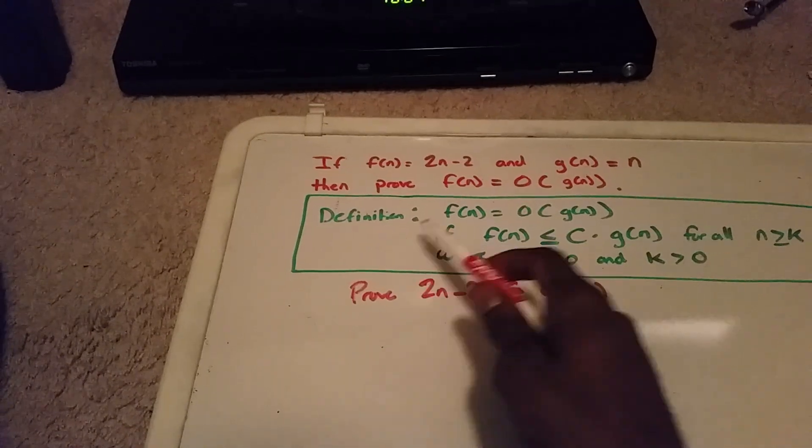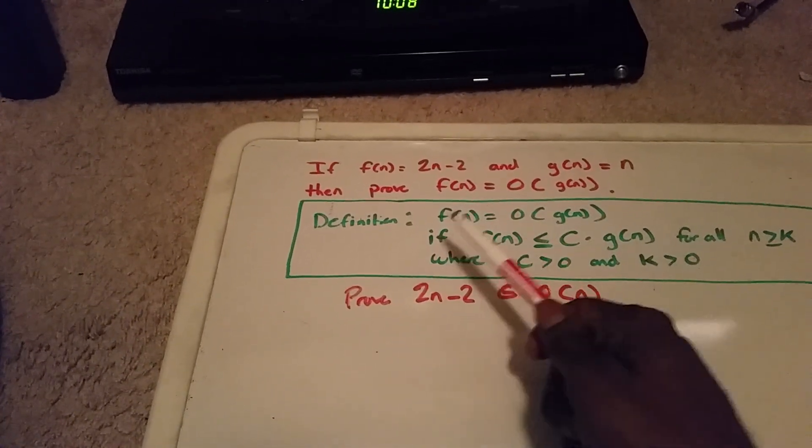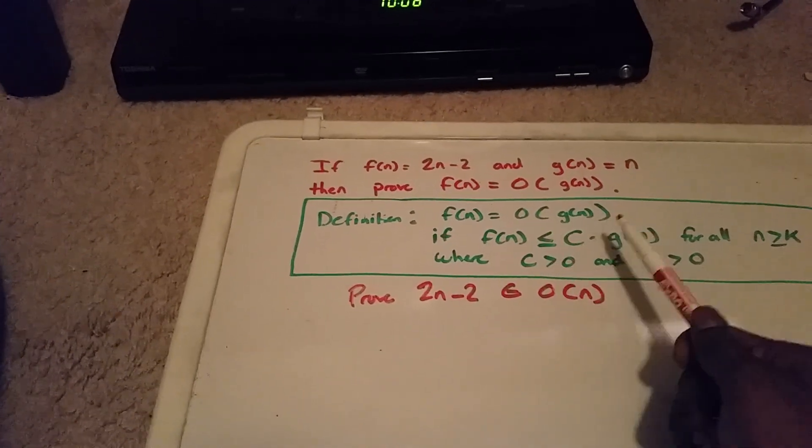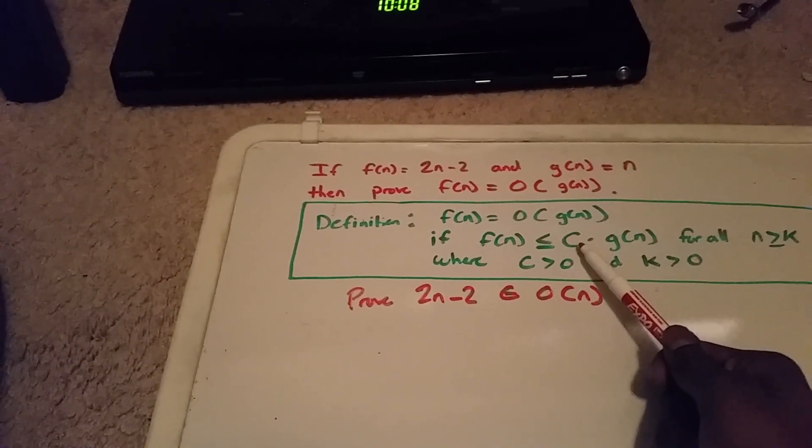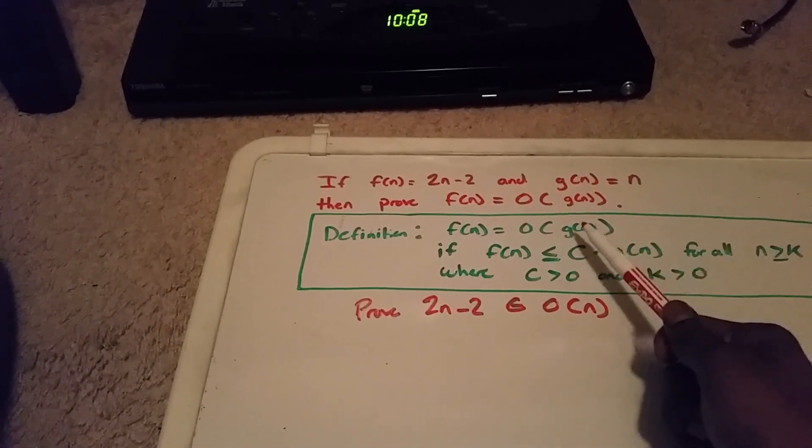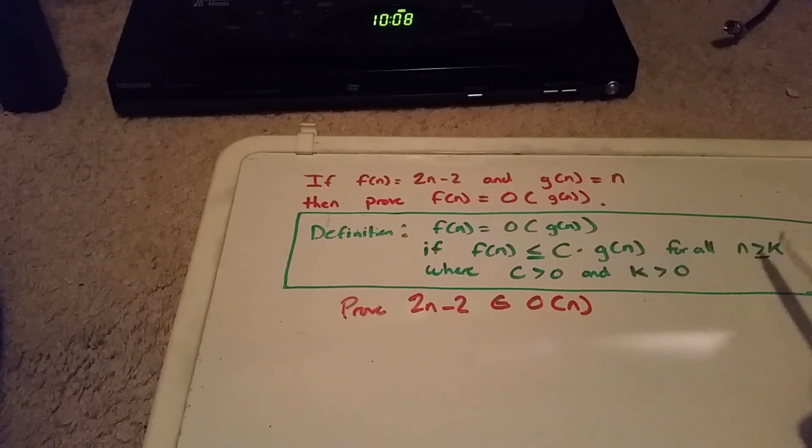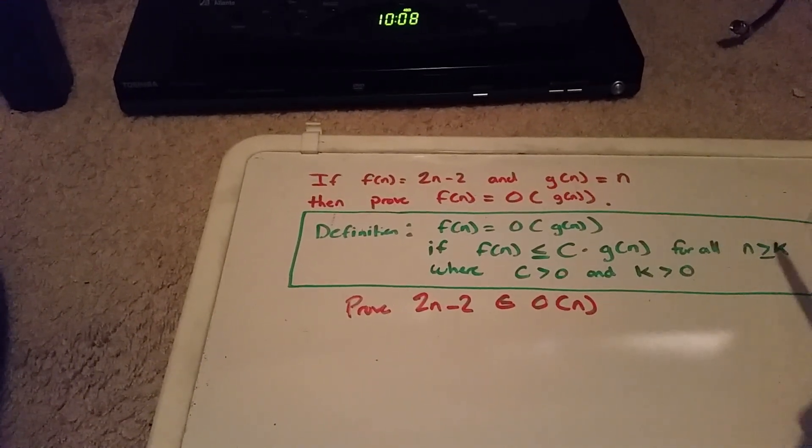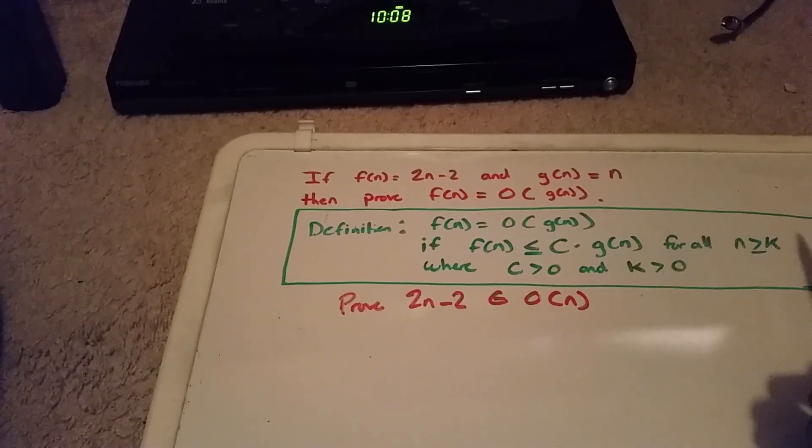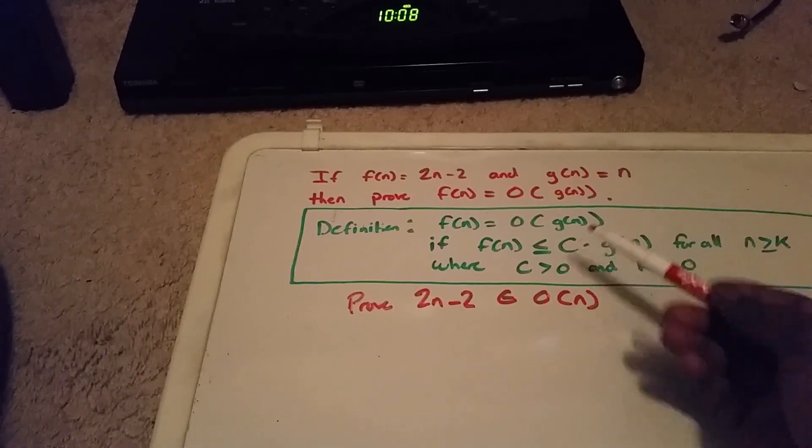Here we have the definition of what it means for a function to belong to big O. If f(n) is less than or equal to some positive constant times g(n) for all n greater than or equal to k, where k is also a positive number, then the function belongs to big O of g(n).